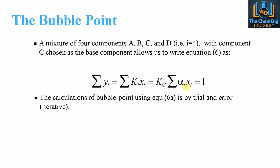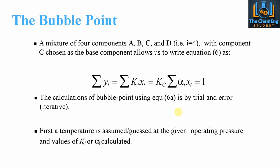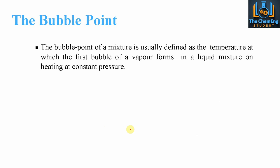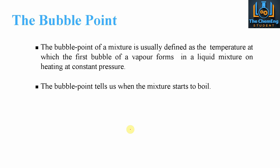The calculations for the bubble point are essentially iterative — a trial and error process. What we would have to do is assume or guess a temperature at the given operating pressures, and then we can determine the values of Ki or alpha i. Remember that alpha i is the relative volatility. We need to use our judgement based on the system in order to guess our first temperature. We can also use the interaction of Henry's law to see the relationship between the liquid composition and the vapour composition.